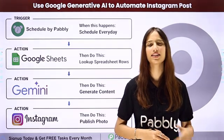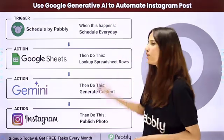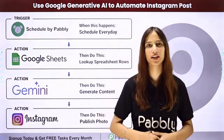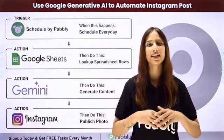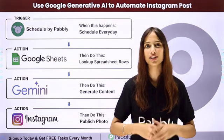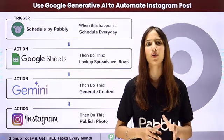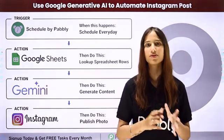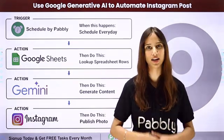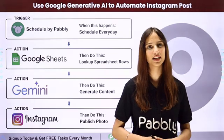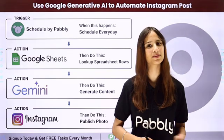Hello everyone, welcome back to Pabbly. In today's video we are going to understand how to use Google Generative AI to automate Instagram posts. So if you are a social media manager, this automation is for you. I want to post regularly on my Instagram account. In a Google Sheet I've added the post title and the image link, and by using Google Gemini I want to generate captions. Once the caption is generated, I wish to automatically create that post on my Instagram account. To do this, I need to build a connection between these applications using Pabbly Connect.